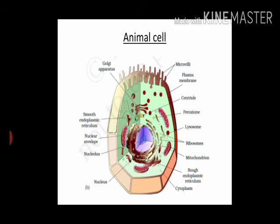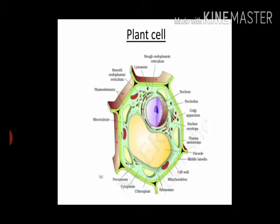Coming to plant cell — it is shown in green so it is easy to identify. The major difference between plant cell and animal cell is that the plant cell has both a cell wall and a cell membrane. Looking at the cell organelles of plant cell, you can see large vacuoles are present. Vacuoles are present in animal cells too, but they are very small, whereas in plant cells they are large.